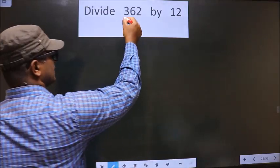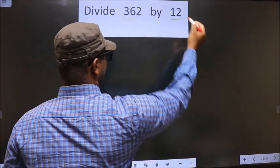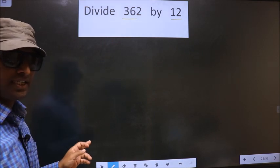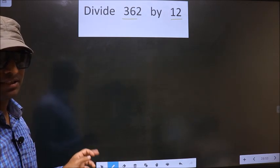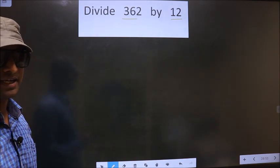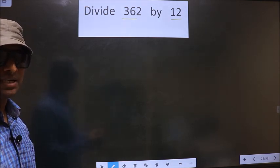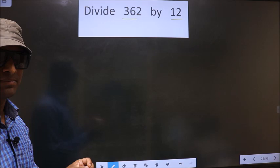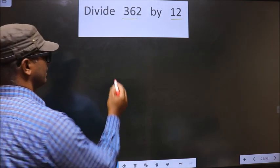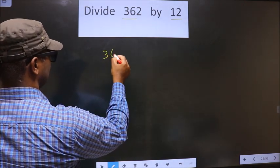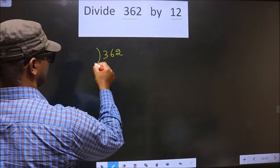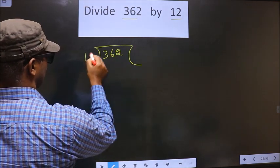Divide 362 by 12. While doing this division, many do a mistake, and I will tell you what mistake they do. But before that, first we should frame it in this way: 362 divided by 12.